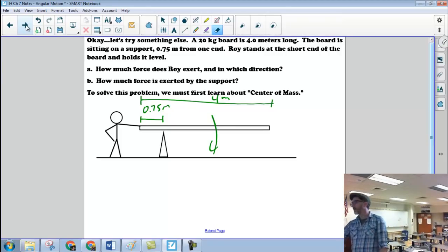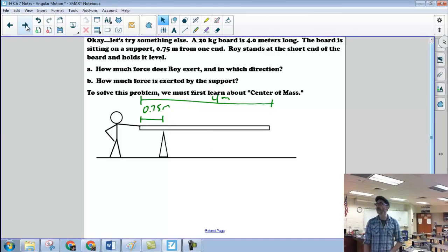So what's happening here is Roy is applying a force to the board to prevent it from moving, to prevent it from rotating. And so the question is how much force is Roy going to exert and in which direction? And then B, how much force is exerted by the support? So worth noting here, there are two unknown forces. We don't know how much force Roy is going to exert. We also don't know how much force the support is going to exert. So anyway, before we can solve this, we have to learn about what's called center of mass.